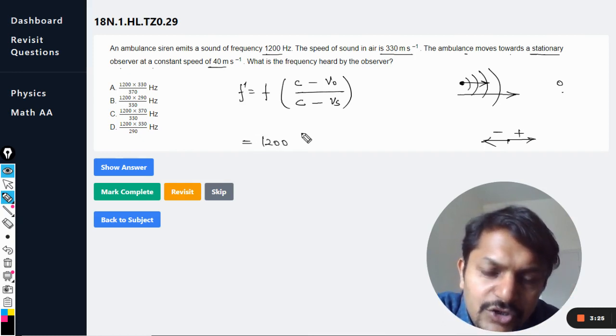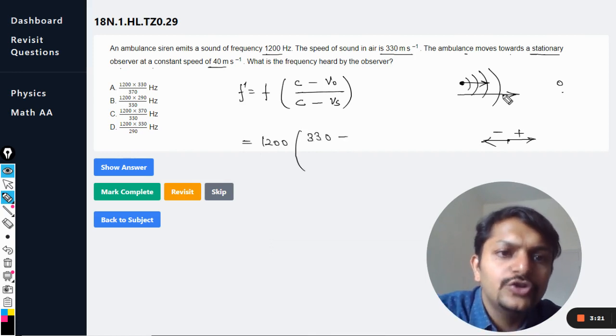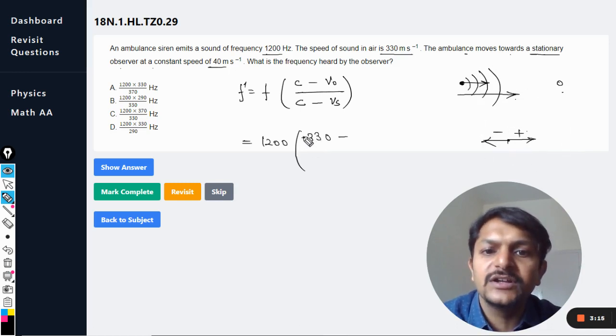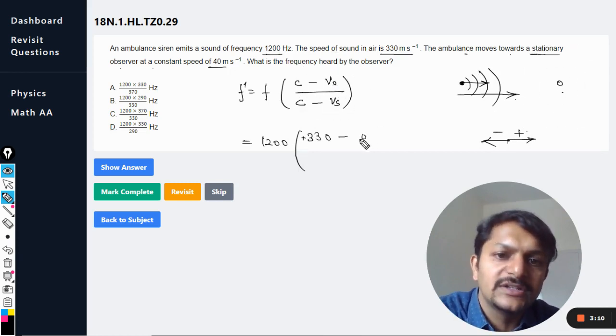Let me do that for you now. The frequency is 1200 hertz. The speed is given as 330. Now you see the speed of sound, so sound is moving in the positive direction and that is why it is positive 330, minus the velocity of observer. The observer is not moving, so it is zero.